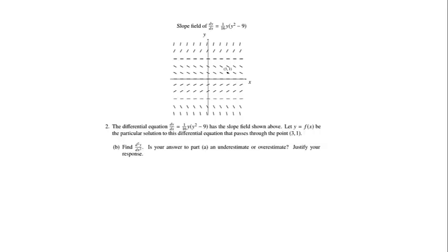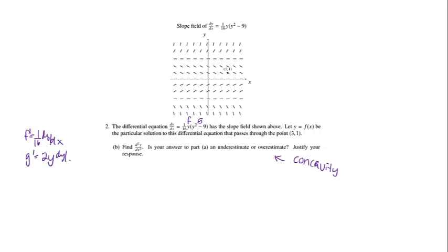Part B: find d²y/dx². Notice that they ask whether your answer is an underestimate or overestimate — that will have to do with concavity, and we'll deal with that when we're done. The first thing I'm going to do is take the derivative. I notice I'm going to have to use the product rule, so this will be f and this will be g. I'll also be using implicit differentiation, so f prime will equal 1/16th times dy/dx, and g prime will equal 2y times dy/dx.